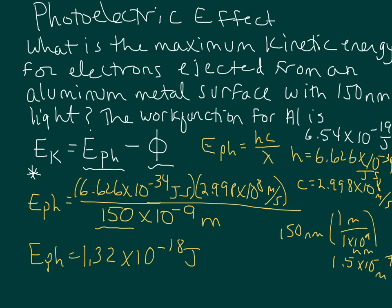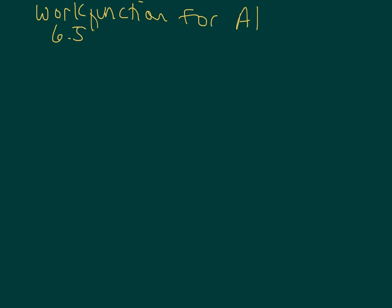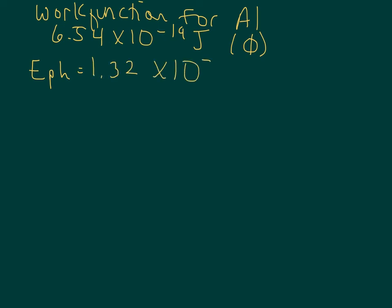Now we have the energy of our photon. I'm going to go to the next slide and write down a few key tidbits of information. We were told that our work function for aluminum, phi, was 6.54 times 10 to the negative 19 joules. And we also have the energy of our photon now: 1.32 times 10 to the negative 18 joules.